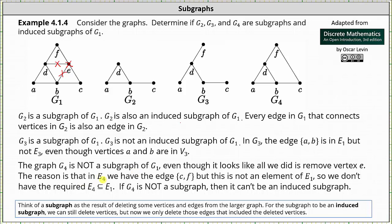So once again, the graph of G4 is not a subgraph of G1, even though it looks like all we did is remove vertex E. The reason is that in E4, the set of edges of G4, we have the edge CF, but this is not an element of E1, the set of edges of G1. So we don't have the requirement that E4, the set of edges of G4, is a subset of E1, the set of edges of G1. If G4 is not a subgraph, then it also can't be an induced subgraph.